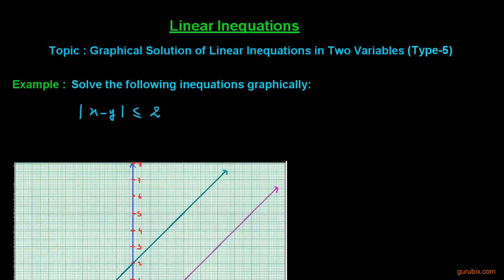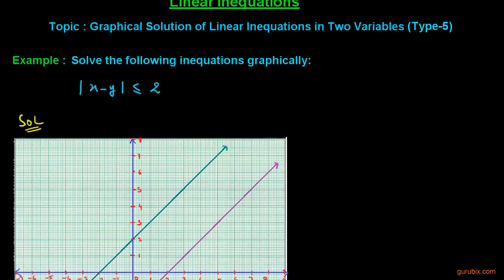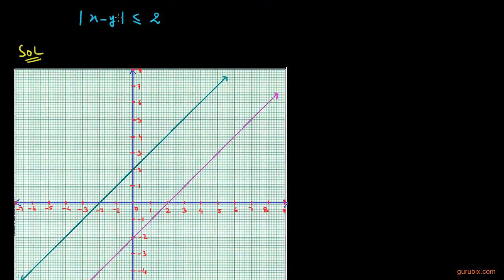Welcome friends. Here is another type of linear inequation in two variables and we have to solve it graphically. The equation is mod x minus y is less than or equals to 2. So let us see how to solve it. First of all, we shall solve this linear inequation algebraically.